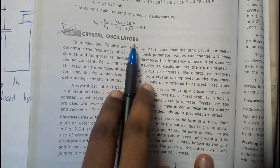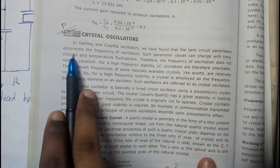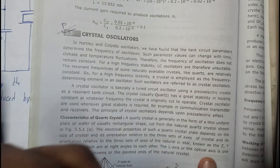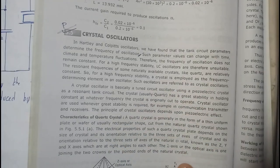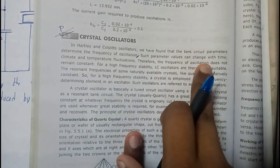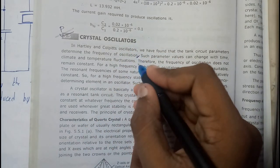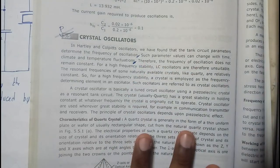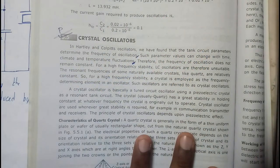In Hartley and Colpitts oscillators, we have found that tank circuit parameters determine the frequency of the oscillator. We used the tank circuit which has inductors and capacitors. Such parameter values can be changed with time, climate, and temperature fluctuations. That is going to be a drawback of Hartley and Colpitts.